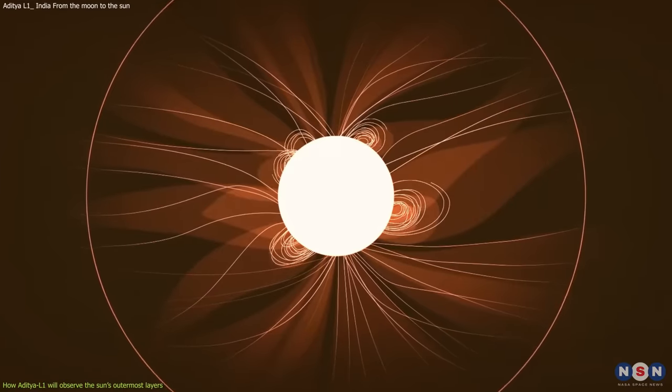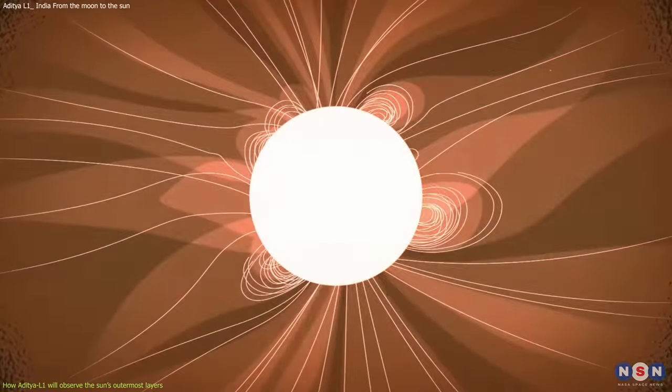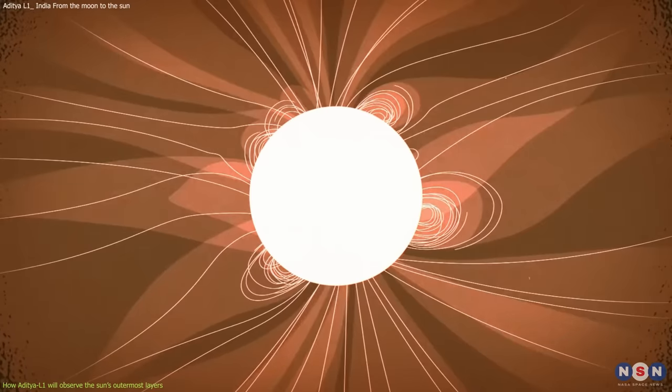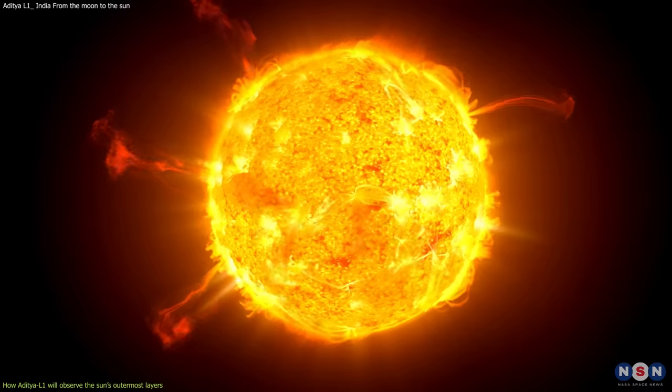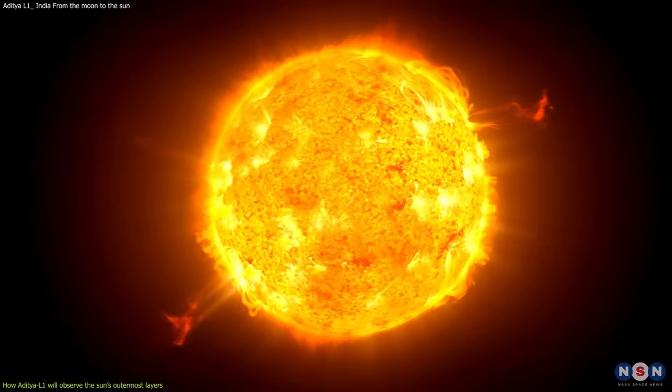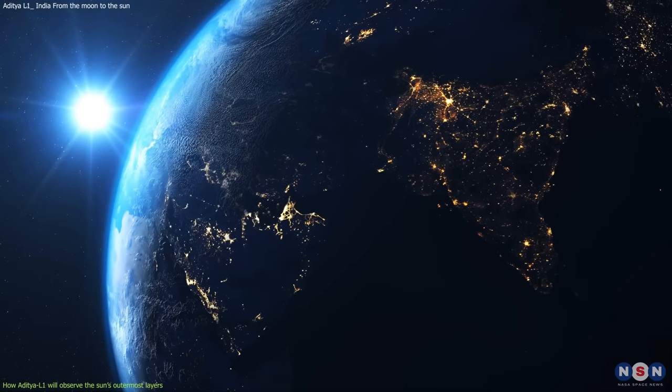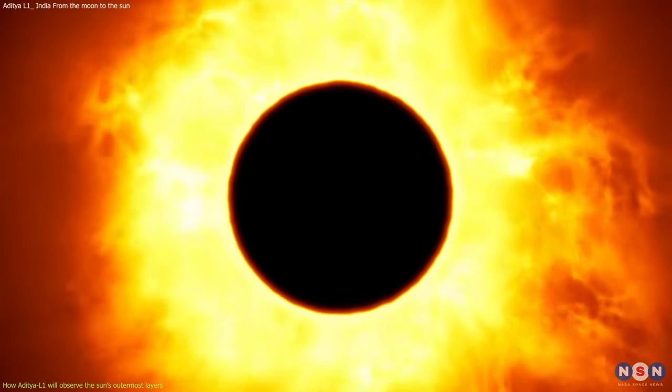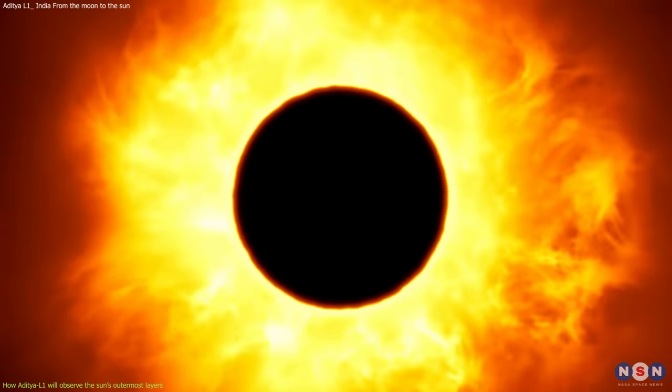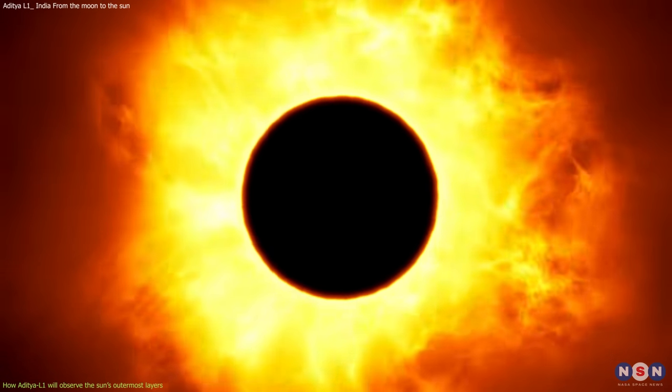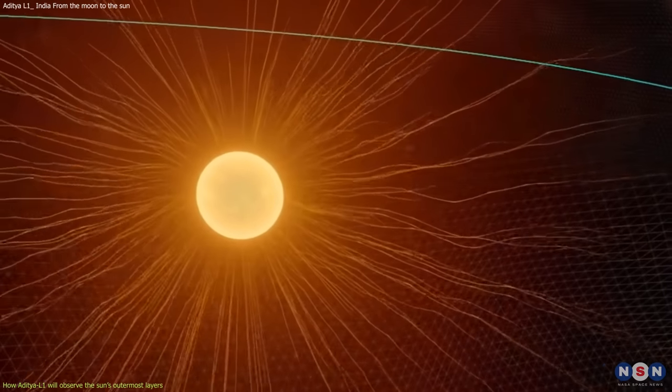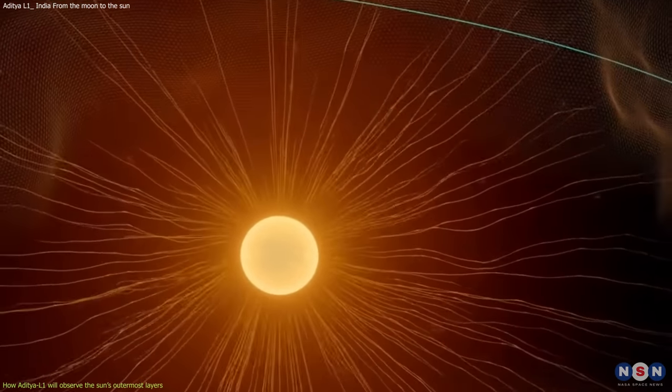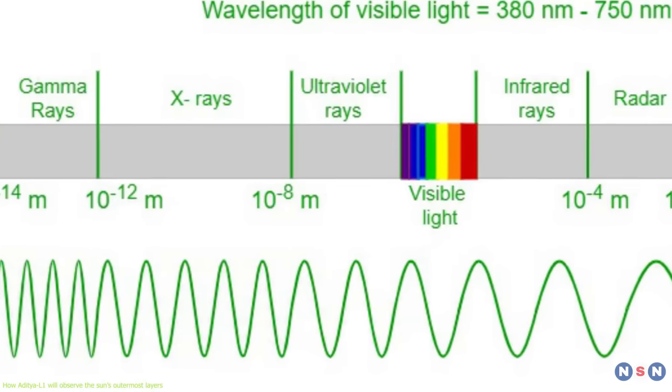The chromosphere and the corona are very important for understanding solar activity and space weather, but they are also very difficult to observe from Earth. This is because they are much fainter than the photosphere, and they are usually hidden by the brightness of the Sun. To see them clearly, we need special instruments that can block out or filter out most of the visible light from the photosphere. We also need instruments that can detect other wavelengths of light that are emitted by these layers, such as ultraviolet or X-rays.